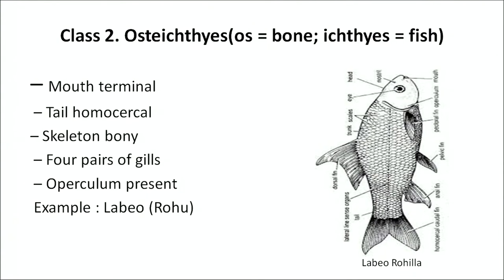The second class is Osteichthyes — 'osteo' means bone and 'ichthyes' means fish — so these are bony fish. The mouth is terminal and the tail is homocercal, meaning the tail appears outwardly symmetrical with the backbone passing into the upper lobe. The skeleton is bony. They have four pairs of gills and the operculum is present. Example: Labeo or Rohu.